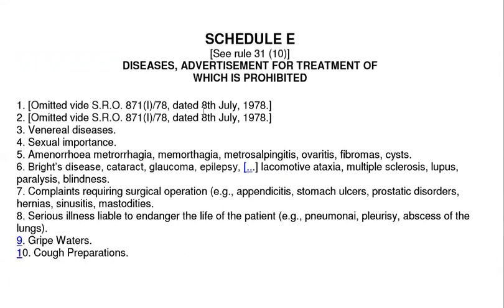Schedule E lists diseases for which advertisement is prohibited. Advertisement for the treatment of these diseases is prohibited in drugs. This was notified via SRO dated 8th July 1978.